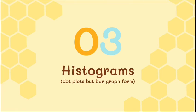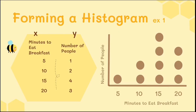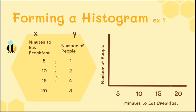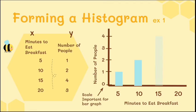Now let's go into histograms — these are like dot plots but in bar graph form. Using the same breakfast example, the dot plot showed minutes to eat breakfast and number of people, but now instead of dots we draw bars. A scale is added on the y-axis so you can read how far the bar goes. For 5 minutes there's 1 person, so draw the bar up to 1. For 10 minutes, draw it up to 2. For 15 minutes go up to 4, and for 20 minutes go to 3. That's your histogram.